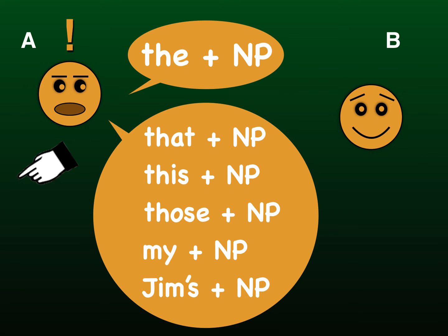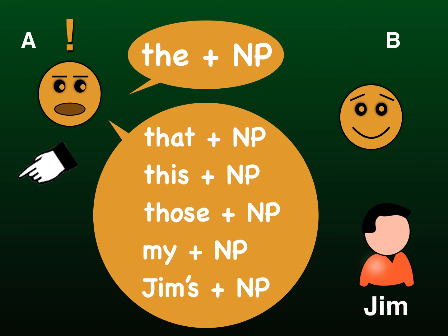If A tells B about something belonging to Jim, then B should already know who Jim is. If B doesn't know Jim, then A would first have to say something like 'I have a friend called Jim'. Then he can continue.